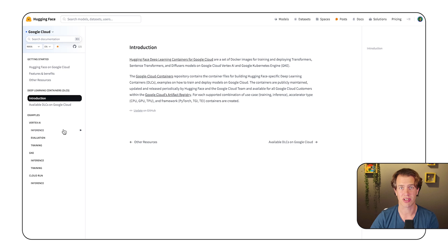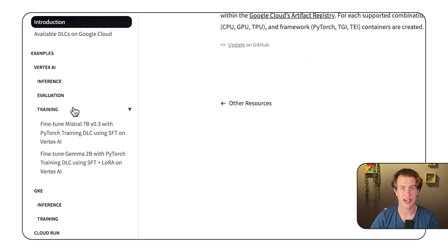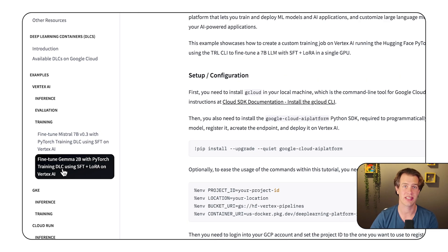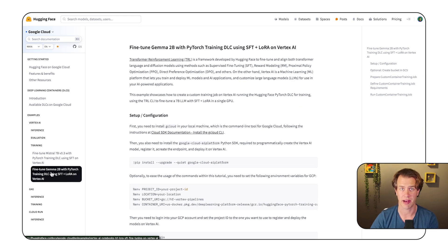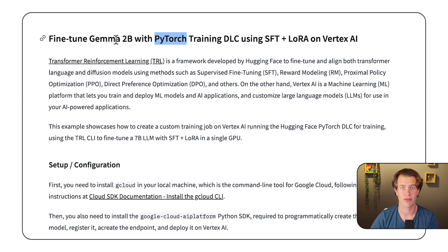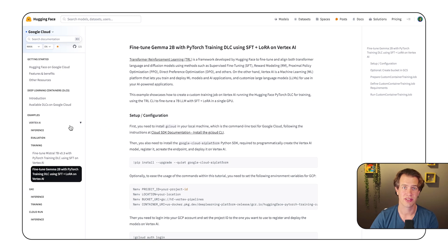Let's take a closer look at the use cases. Fine-tuning of large language models is an important one. With fine-tuning, you take an existing open model such as Gemma or Mistral and refine it to achieve better performance on a particular task. You use the PyTorch training container for this.